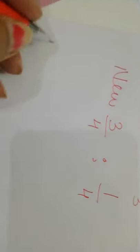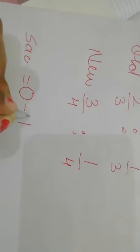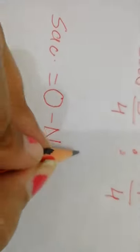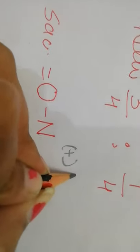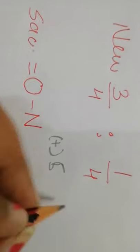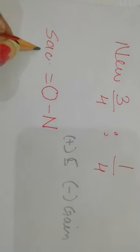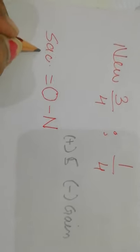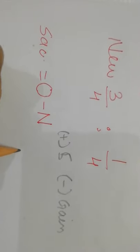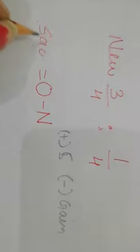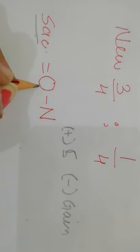Now we will calculate the sacrificing ratio. The formula for sacrificing ratio is old minus new. One thing we need to focus on: if the answer is positive, then it is a sacrifice. If the answer is negative, then it is a gain. The formula is old minus new.